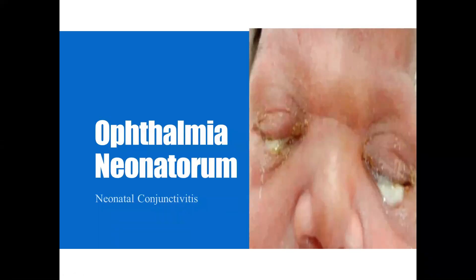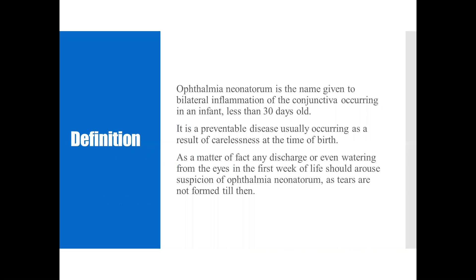Hello everyone. Today we will be talking about Ophthalmia Neonatorum, which is commonly also known as neonatal conjunctivitis. Ophthalmia Neonatorum is basically the name given to bilateral inflammation of the conjunctiva occurring in an infant less than 30 days — basically occurring in a neonate. It is a preventable disease usually occurring as a result of carelessness at the time of birth. Any discharge or even watering from the eyes in the first week of life should arouse suspicion of Ophthalmia Neonatorum, as tears are not formed till then.